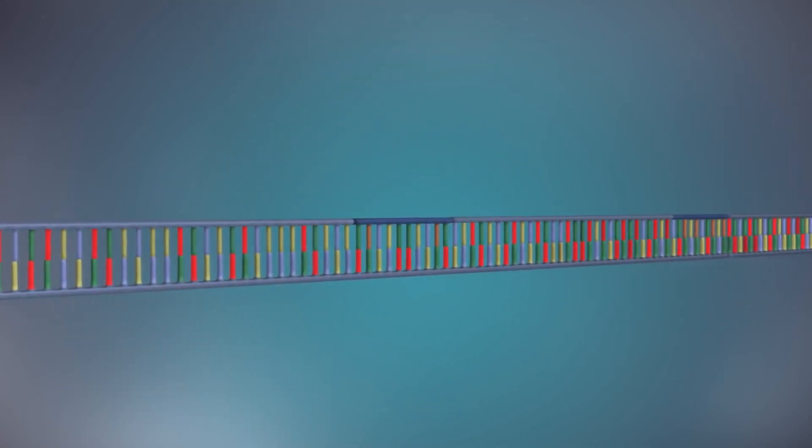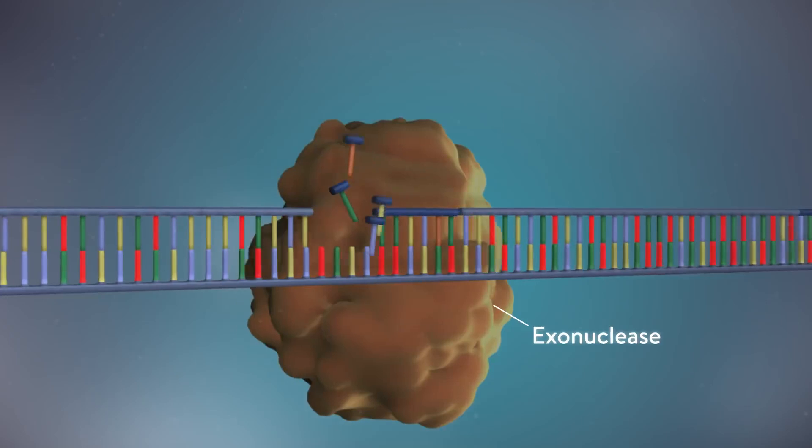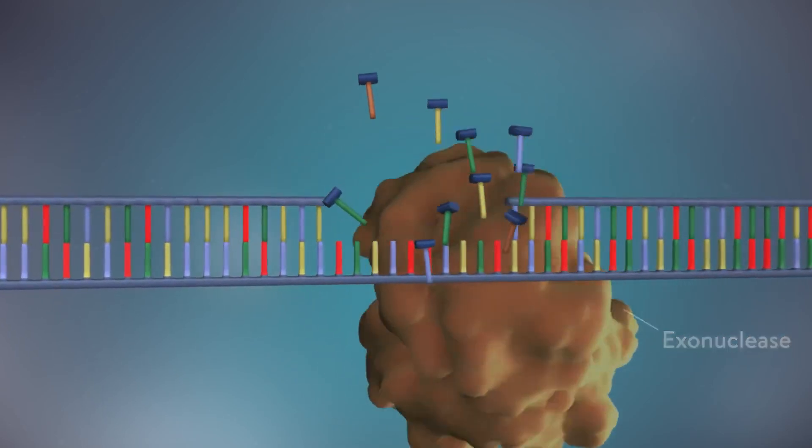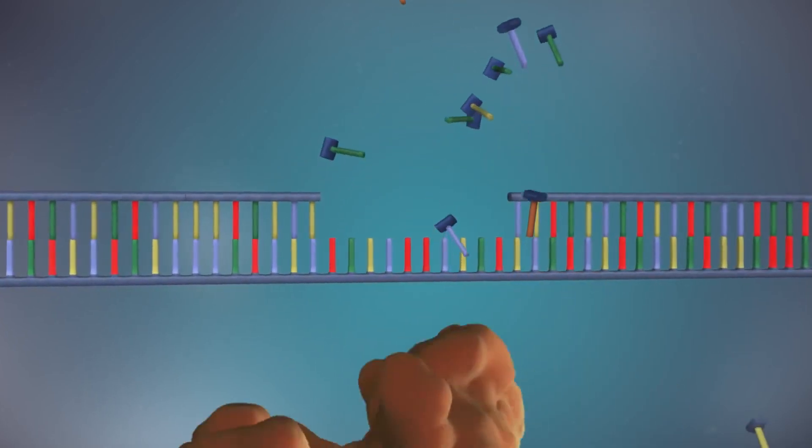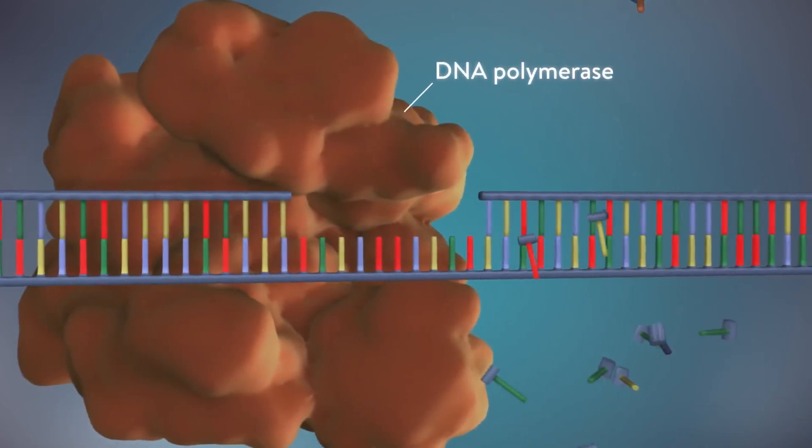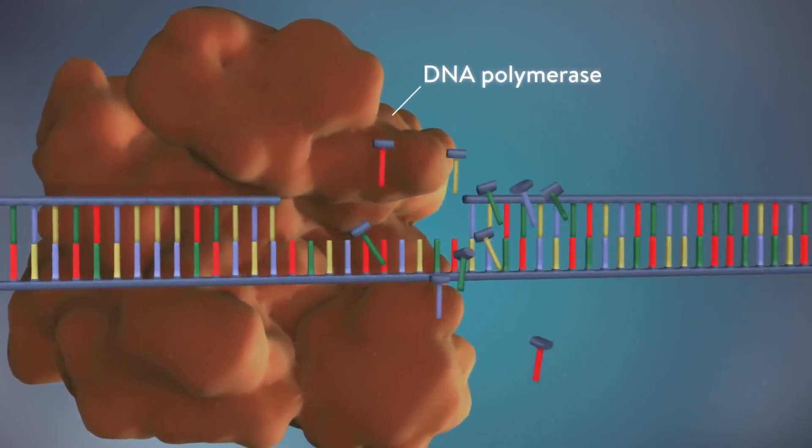Once the new DNA has been made, the enzyme exonuclease removes all the RNA primers from both strands of DNA. Another DNA polymerase enzyme then fills in the gaps that are left behind with DNA.